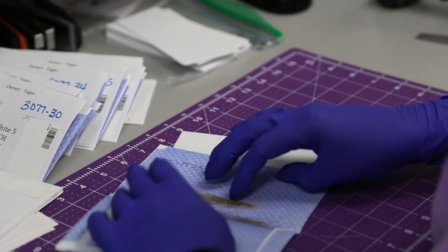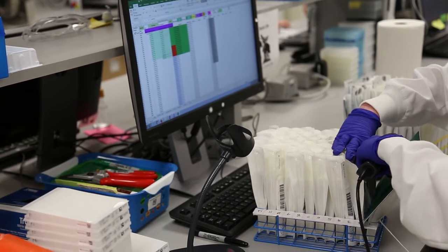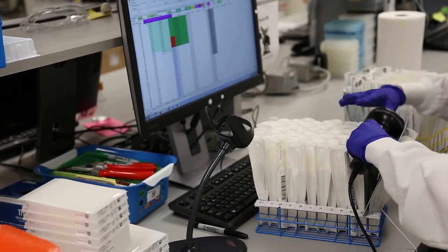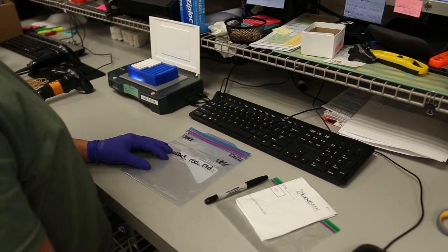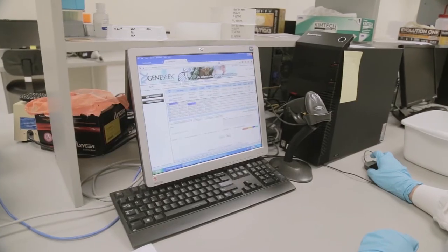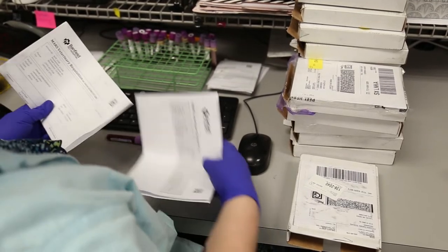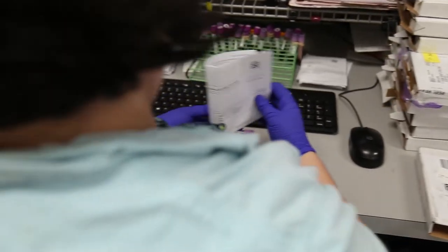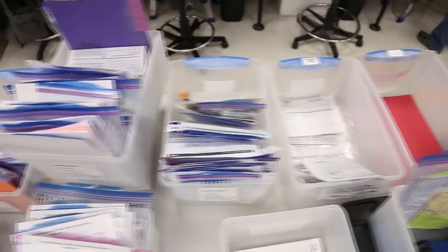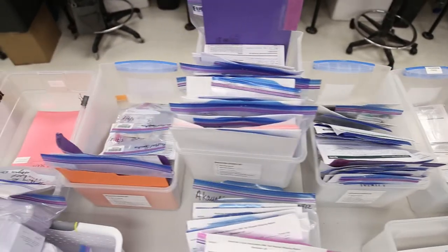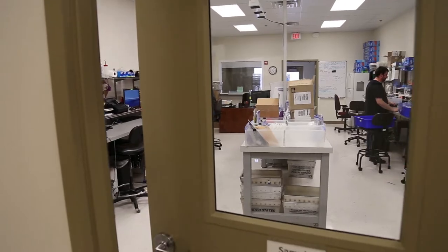When the materials arrive at sample reception, our group logs every item into our system, giving each a specific ID that follows it from beginning to end. A tool called the Laboratory Information Management System tracks the hundreds of thousands of tests underway. It records essential information about each sample and sets up the testing to reveal DNA encoded in the sample. Think of sample reception like a giant funnel, gathering many thousands of samples each day from many species of animals and plants.